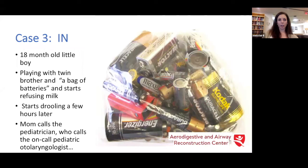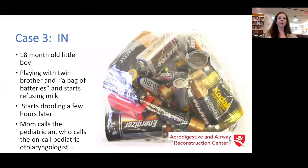Case three: this is an 18-month-old little boy who was playing with his twin brother and a bag of batteries — never a good start to a story. Mom noticed he started refusing milk and then a few hours later started drooling. The timeline is a little sketchy, but mom called the pediatrician who called the on-call pediatric otolaryngologist. What would you do? What would you tell the transfer center? What would you tell mom on the phone? You have a high suspicion that this kid has a battery ingestion and is showing signs of caustic ingestion.